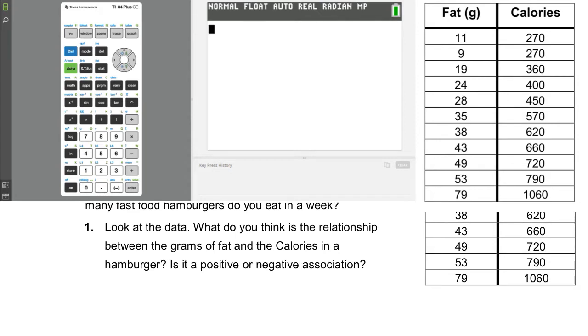Now the question says, is it a positive or negative association? And when we look at this data, as fat goes up, increases in value, so do the calories. So that's a positive association. There's a direct relationship between those two and it's positive. So negative would mean that the fat goes up and the calories go down. Or that's also called inverse. Okay.